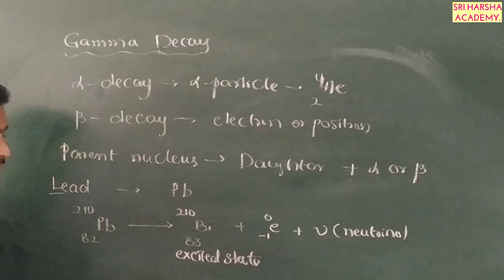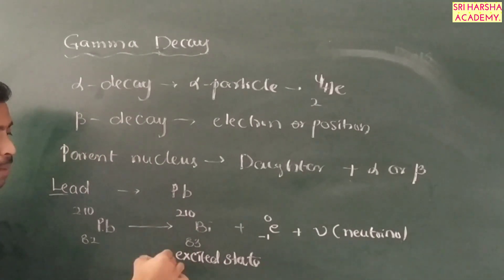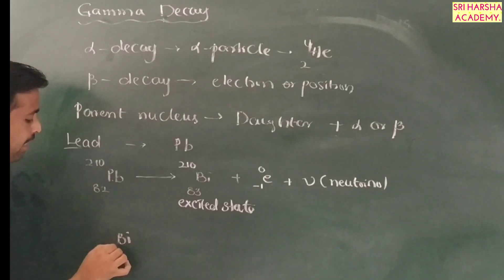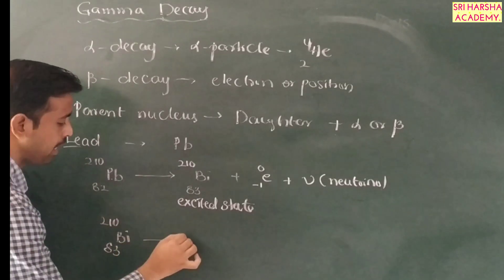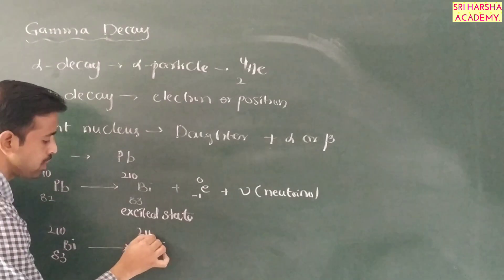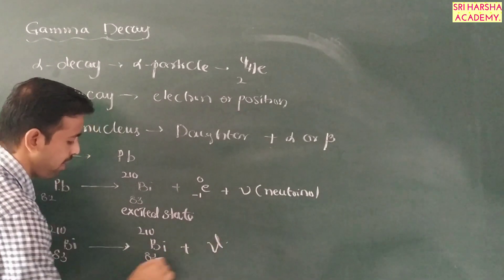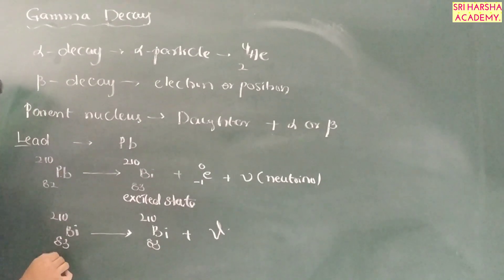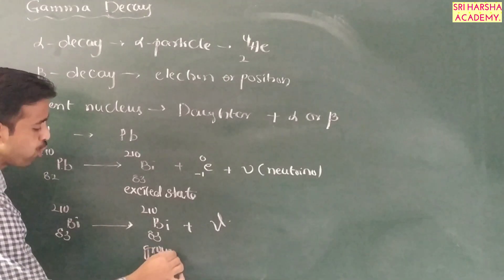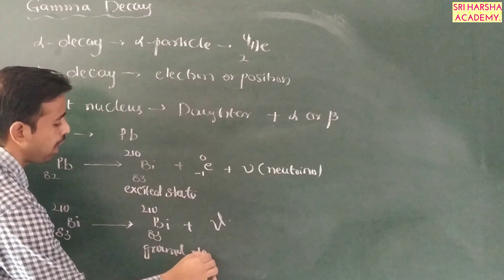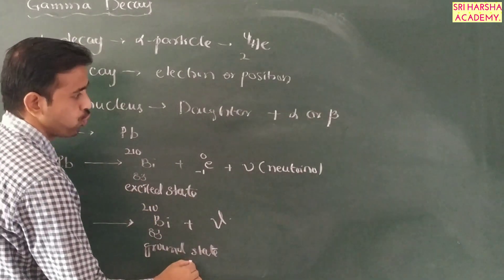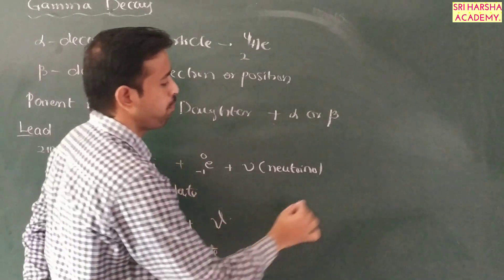The daughter nucleus comes into an excited state. When it falls down to the lower state or ground state, it emits a gamma particle. So bismuth-83-210 transitions from its excited state to its ground state, emitting gamma rays. The gamma particle is emitted during this transition from the excited state to the ground state.